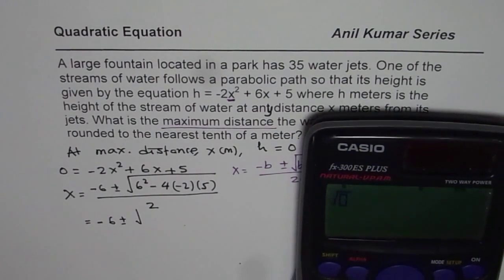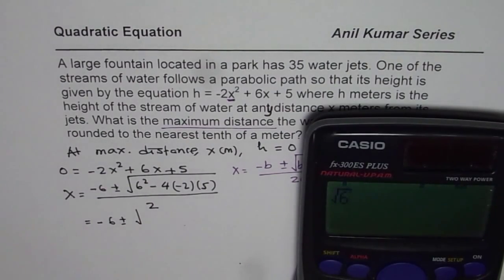So let me do square root: 6 squared plus, since this minus and minus becomes plus, 4 times 2 times 5 is 40.